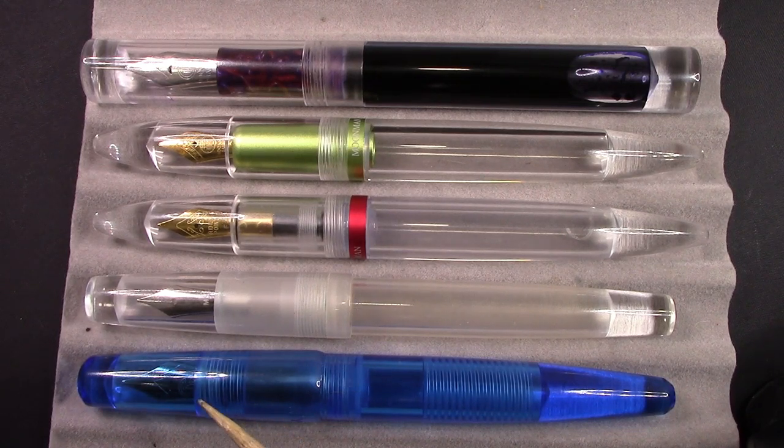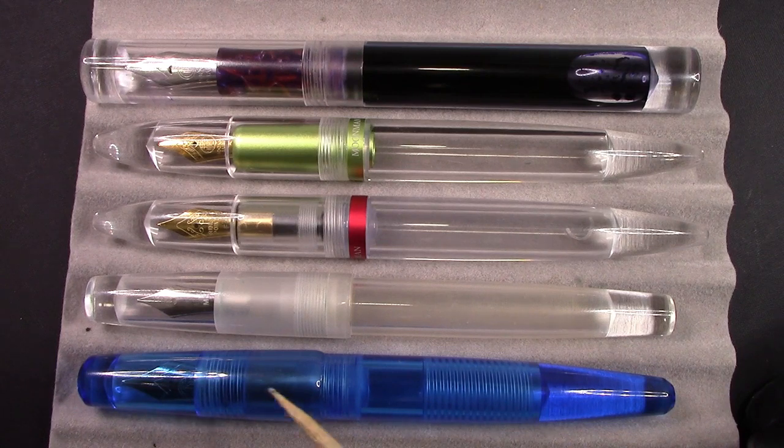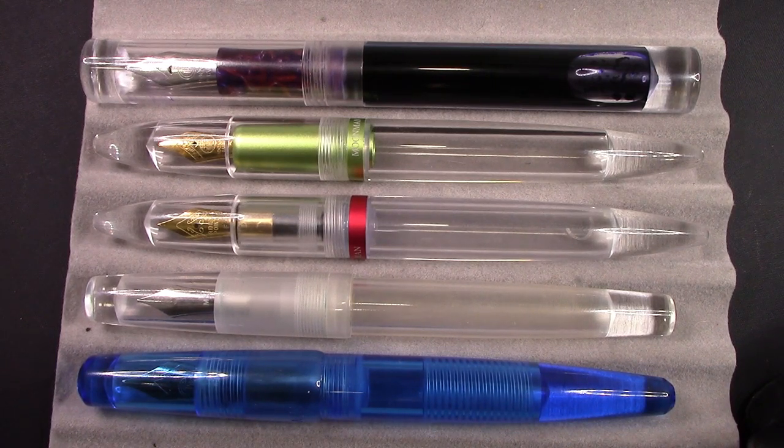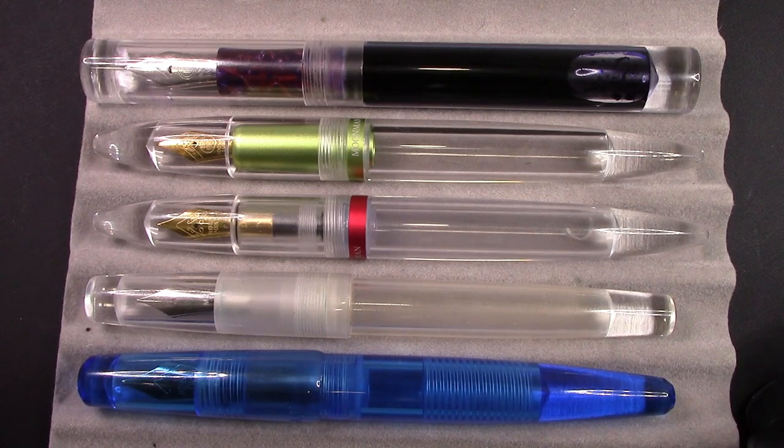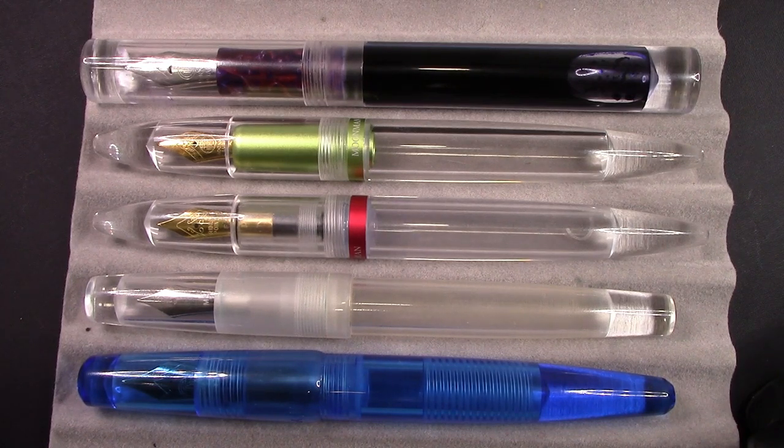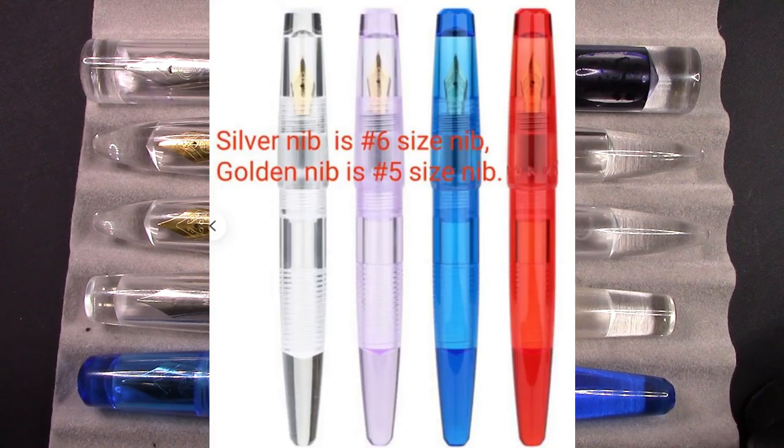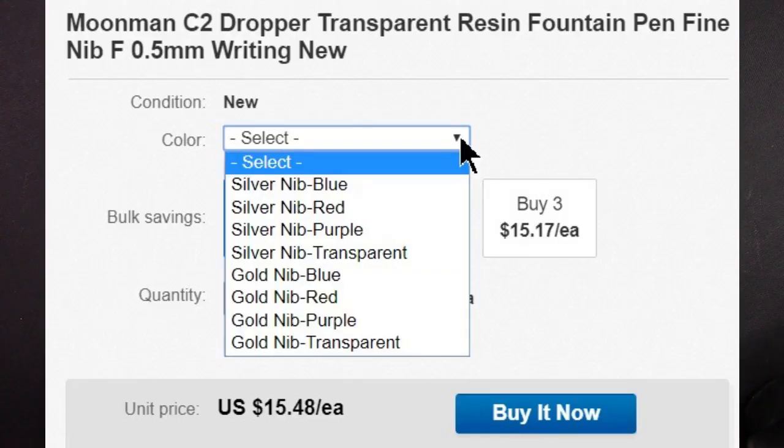One of the things that you need to be aware of if you do try to purchase the C2 is it comes with a silver nib which is a number six nib, or a gold nib which is a number five. Bobby on Etsy illustrates that very clearly, but some of the other sellers just have you select between a gold and silver nib, and you may not be aware that they're two different sizes.